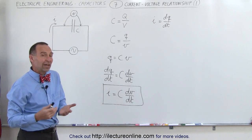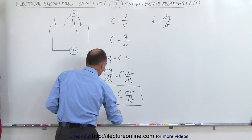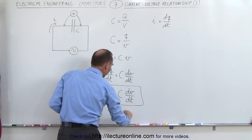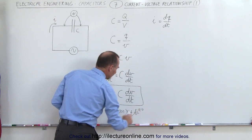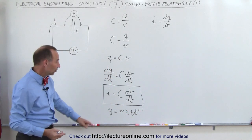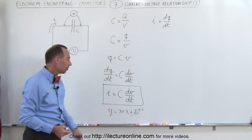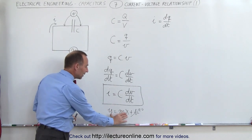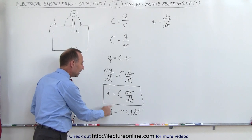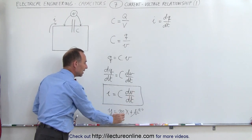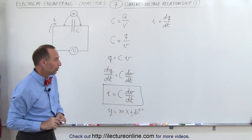Notice that this equation has a similarity to something you're familiar with: the y = mx + b equation. If we let b go to zero, this is a linear equation where y is the vertical axis, x is the horizontal axis, and m is the slope. Equating the two equations, instead of y we have i, instead of x we have dV/dt, and instead of the slope we have C. So C is now going to be the slope of our new equation.